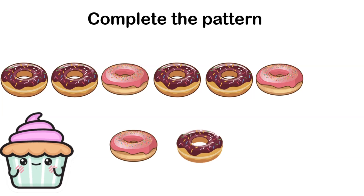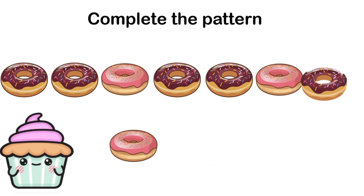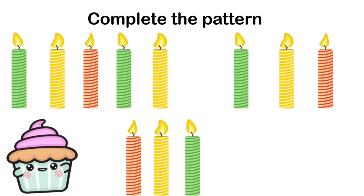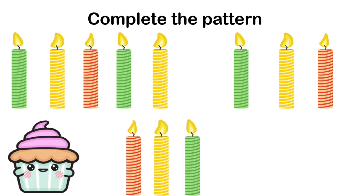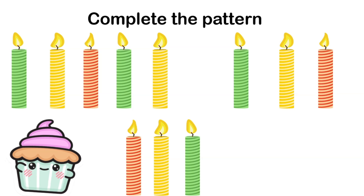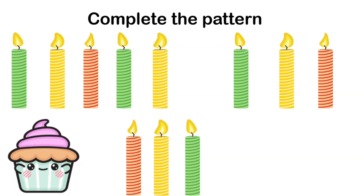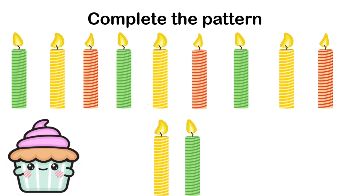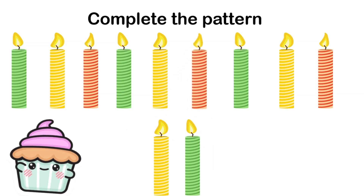Can you help me complete this pattern? I'm putting some birthday candles on the cake using a pattern: green, yellow, red. Then I have green, yellow — what comes next? Should I put green, yellow, or red? You're right — I should put a red candle! Thank you. I hope you enjoyed learning about patterns with me.